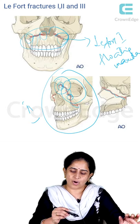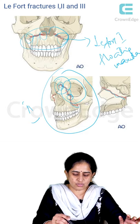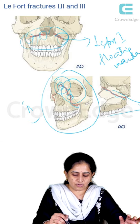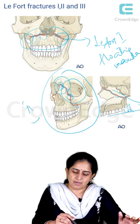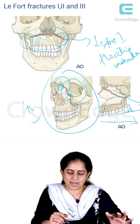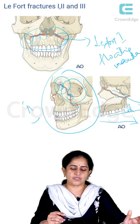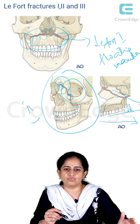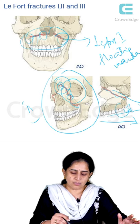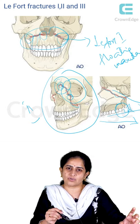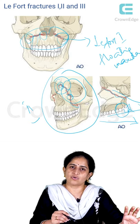All these fractures — whether Le Fort 1, 2, or 3 — will have a change in occlusion. The maxilla is oriented to the base of the skull at a 45-degree angulation. Once the maxilla is separated from the skull base, the entire maxilla tends to go downwards and backwards at this 45-degree angulation. The occlusal changes you will see in a Le Fort 1, 2, or 3 fracture would be an anterior open bite and what is called molar gagging — meaning the molars will be in contact with each other, but in the anterior part of the maxilla there will be an open bite, and the patient will not be able to close their mouth completely.